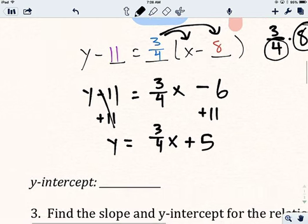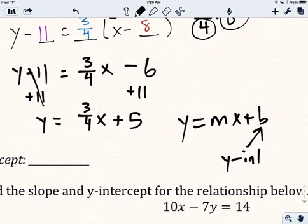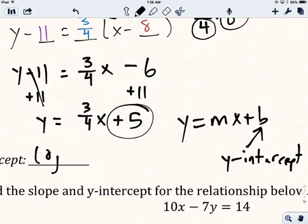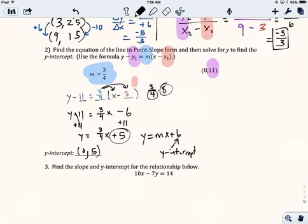Now it's in that slope intercept form, which is the y equals mx plus b form. And b is the y-intercept. So there's my y-intercept right there. I'll write that as 0, 5. Let's keep going.